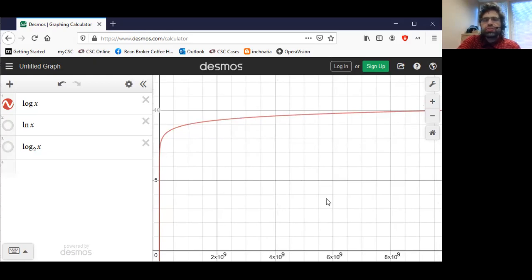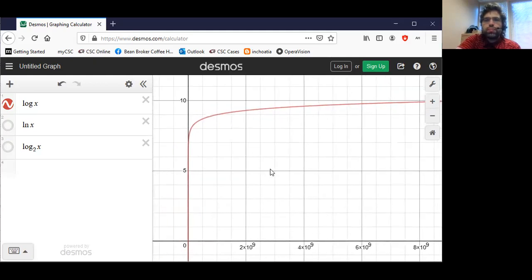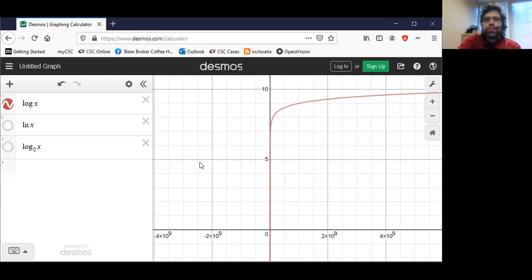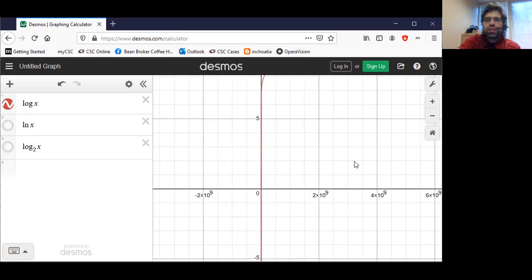But grows extremely slowly, has a vertical asymptote at zero. Not defined out here because the domain of the logarithm is the positive numbers.